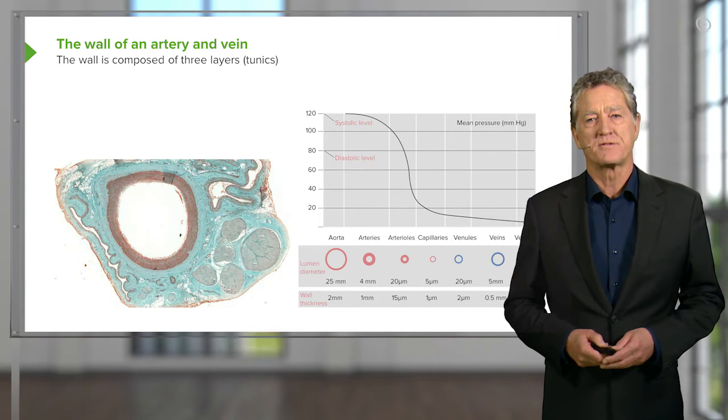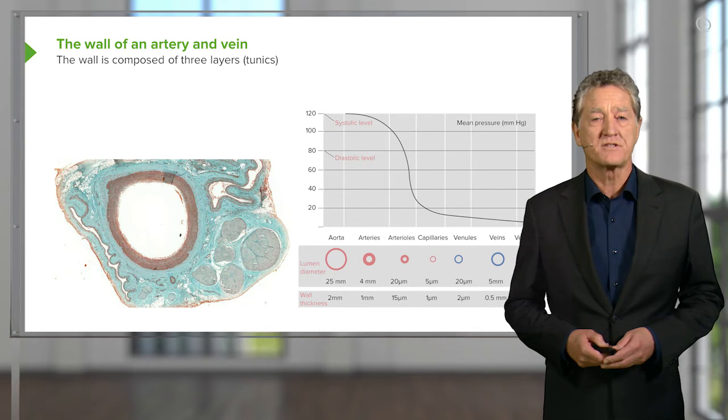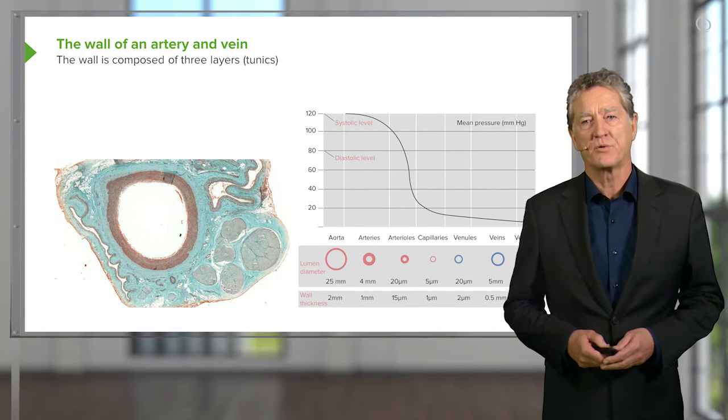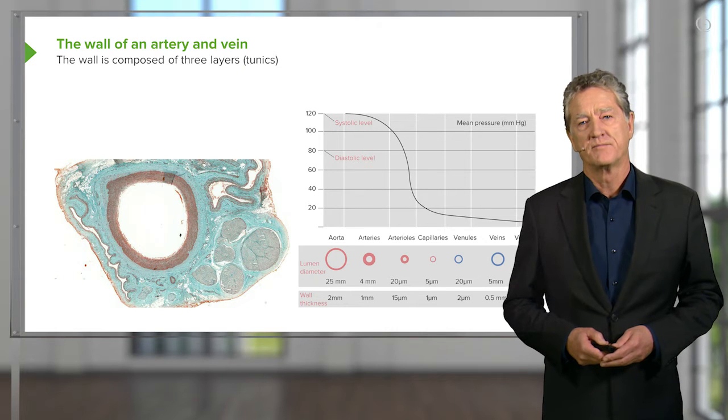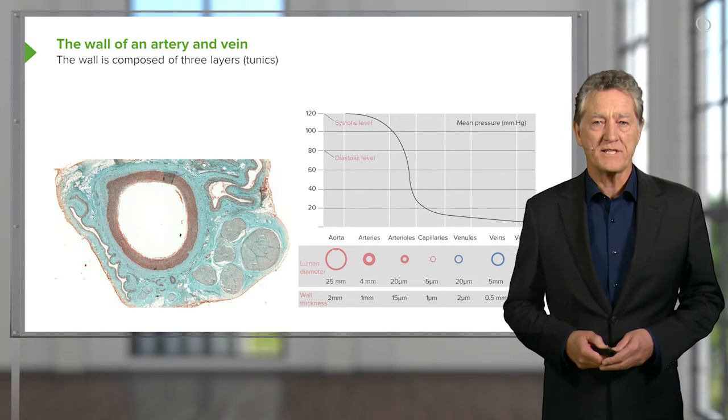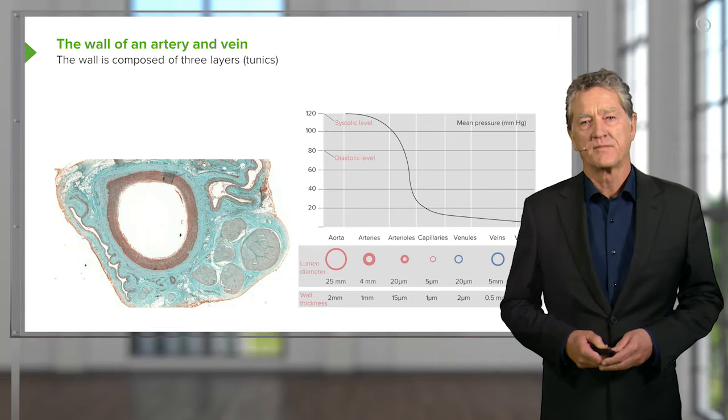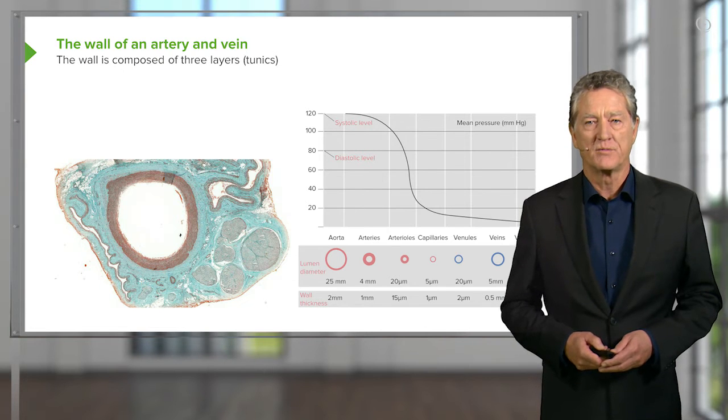When the heart pumps, the pressure is called the systolic pressure, and it averages around 120 millimeters of mercury. And then when the heart goes through a resting phase or filling phase, pressure drops in these vessels down to about 80, and that's called the diastolic pressure.